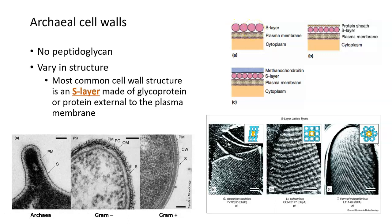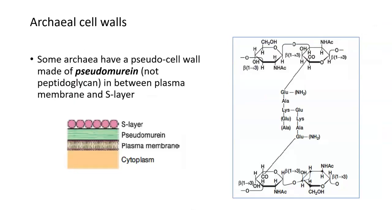So rather than peptidoglycan, which is carbohydrate, these S-layers are mostly composed of protein. Interestingly, some archaea have what we refer to as a pseudo cell wall that is made of this molecule called pseudomurein.